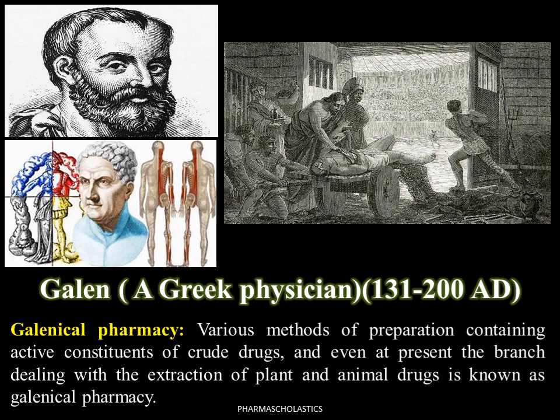Galen put forward the theory that illness was caused by an imbalance of the four humors: blood, phlegm, black bile, and yellow bile. He recommended specific diets to help cleanse putrefied juices, and often purging and bloodletting were used as well. Running a busy medical practice, he also ran his own pharmacy stocked with medicines made from animal and vegetable extracts, with many plants grown in his own garden. Hence, galenical pharmacy — the branch dealing with extraction of plant and animal drugs — is named after him and remains in use today.